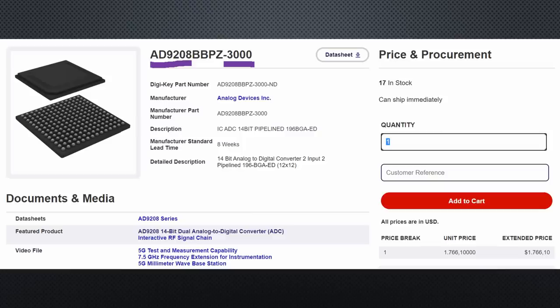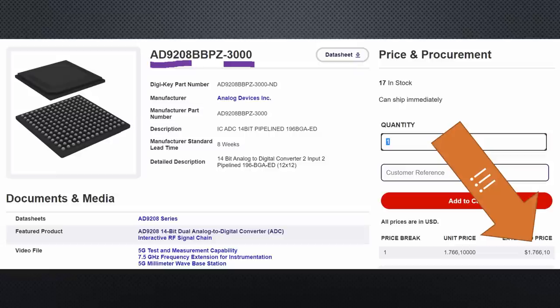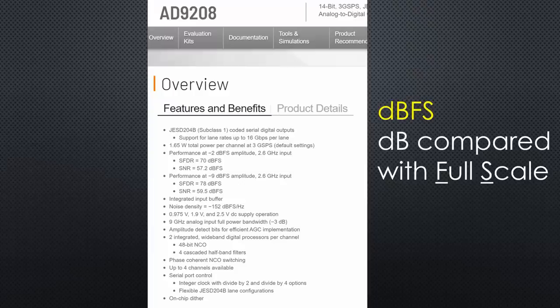An example is the AD9208, which covers up to 3 GHz. Not bad. Also, the price of $1700 for one chip is not bad. You definitely pay attention to what you do if you work with one of those.